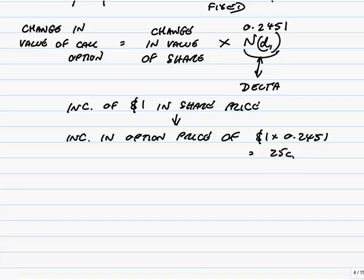So as the share price goes up and down, the option price goes up and down, but the change is smaller. The change in the option price here is only 24.51% of the change in the share price.